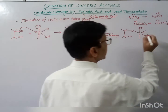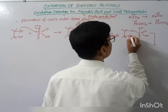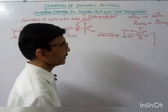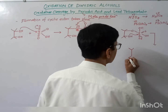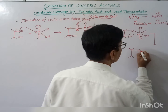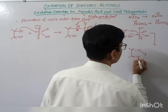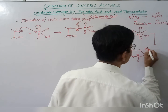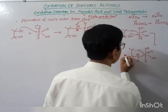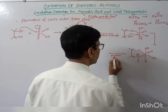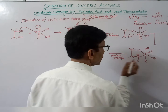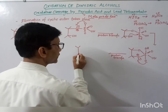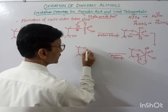In the next step, again the lone pair of electrons attacks the iodine and one of the pi bonds breaks. This oxygen carries a negative charge. Again an internal proton transfer takes place, and the positive charge on the oxygen atom is neutralized. At this point, you get the cyclic ester that is produced.